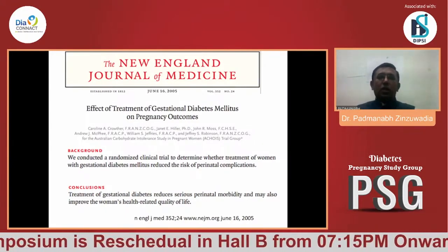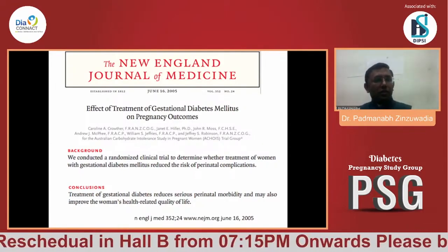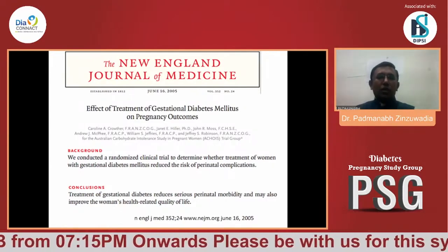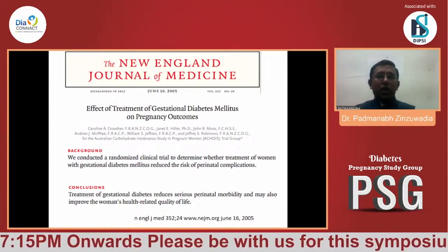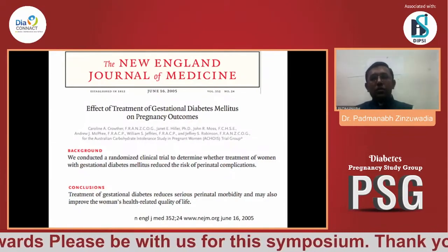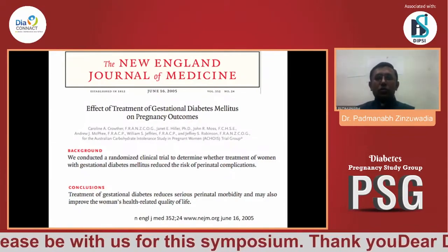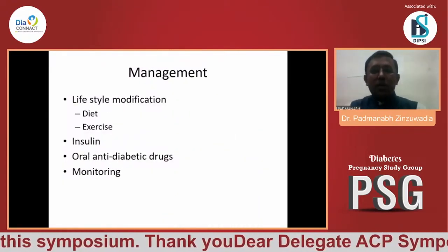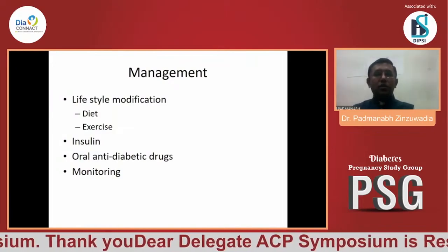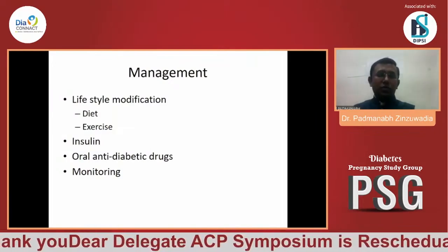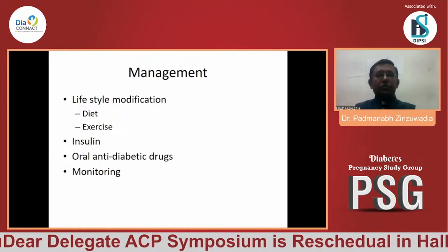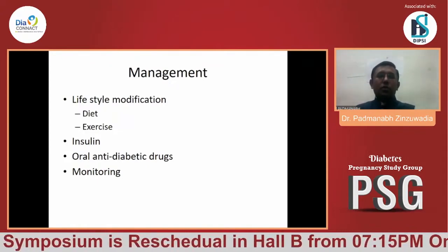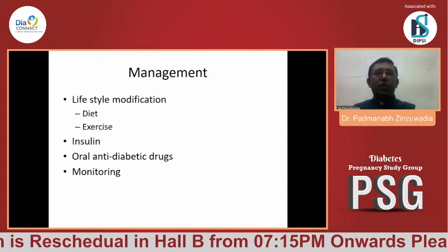The ACOIS trial supports this — treatment of gestational diabetes reduces serious perinatal morbidity and improves women's health-related quality of life. So even correction of hyperglycemia gives a good maternal outcome. In our case, the patient has polyhydramnios as well as a large-for-gestational-age baby with hyperglycemia. A team approach for management of both the obstetric and diabetes aspects is therefore very important.